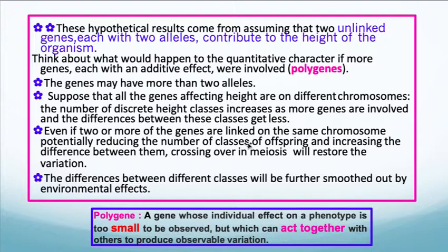The genes may have more than two alleles. Suppose all the genes affecting height are on different chromosomes — the number of discrete height classes increases as more genes are involved, and the differences between these classes get less. Even if two or more of the genes are linked on the same chromosome, crossing over in meiosis will restore variation. The differences between classes will be further smoothed out by environmental effects, like a polygene — a gene whose individual effect on a phenotype is too small to be observed but which can act together with others to produce observable variation.